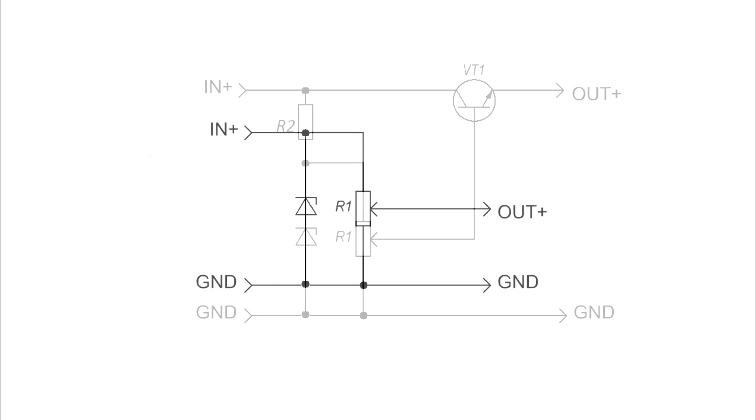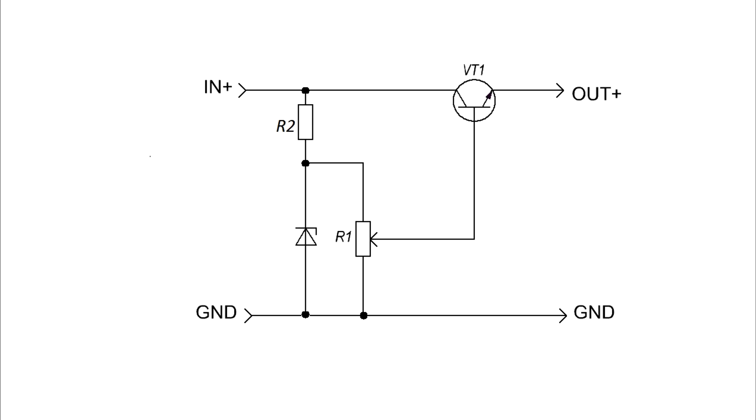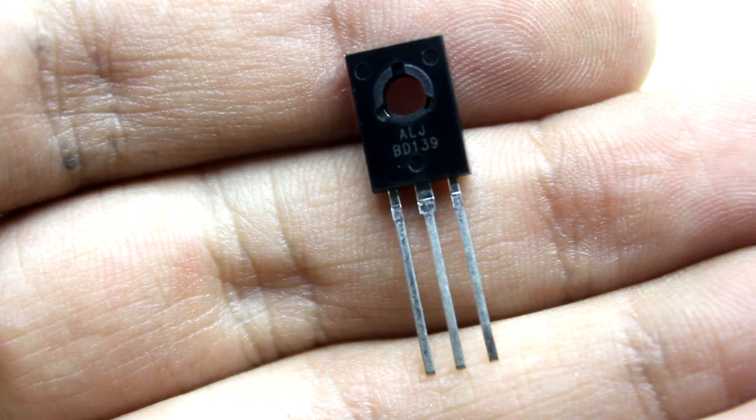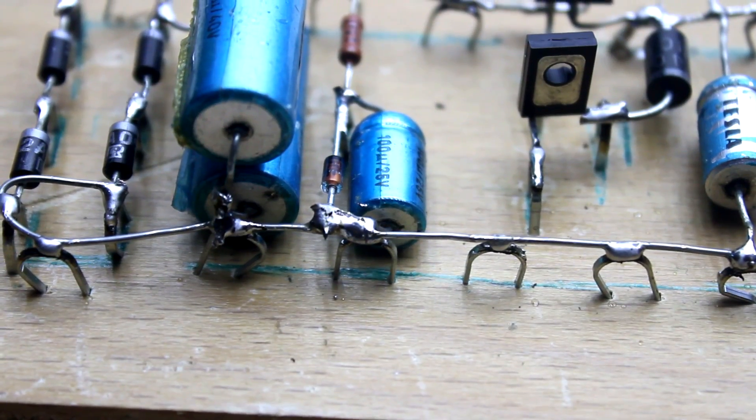For this purpose, a reinforcing element is added to the circuit, I mean a transistor. The transistor amplifies the current from the divider, and our circuit can already be used as a low-power voltage stabilizer.